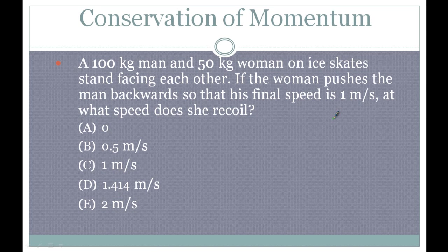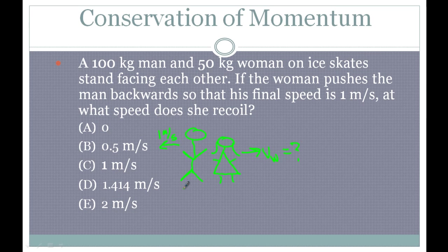Here's another quick problem. A 100-kilogram man and a 50-kilogram woman on ice skates stand facing each other. If the woman pushes the man backwards so that his final speed is 1 meter per second, at what speed does she go? We know his mass is 100 kg and her mass is 50 kg. Initially both of their momentums are zero.